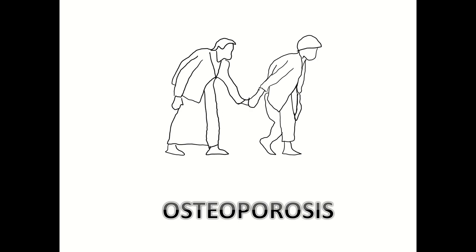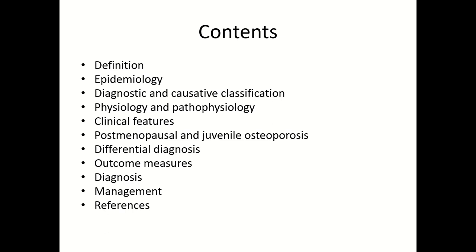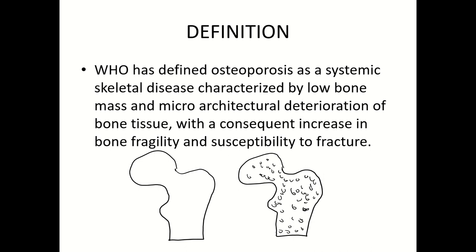Welcome, let us learn about osteoporosis. 'Osteo' means bone, 'porous' means holes — a bone with several holes is known as an osteoporotic bone. The contents we'll be covering will come one by one in the future slides. The WHO has stated that osteoporosis is a skeletal disorder or disease.